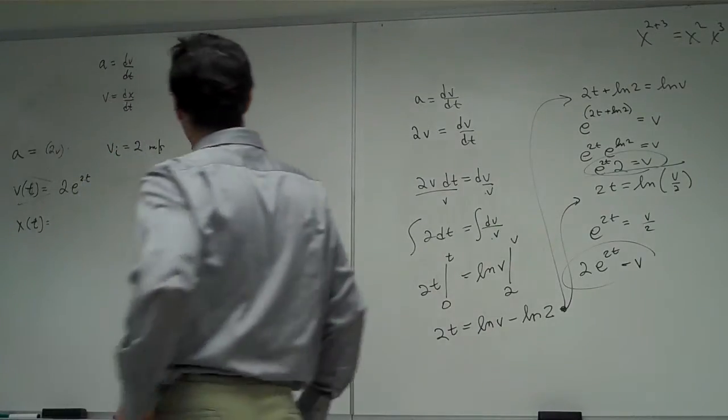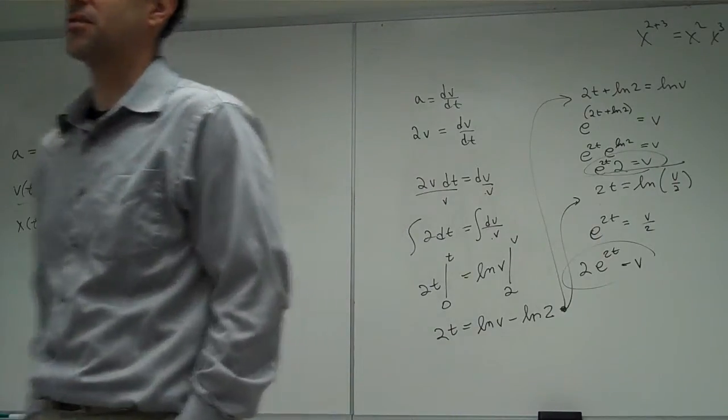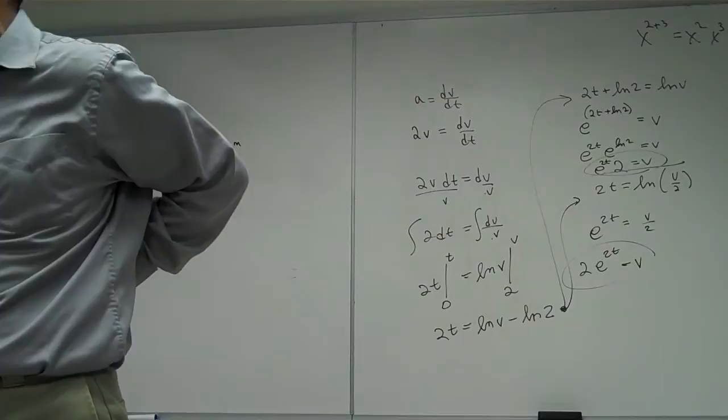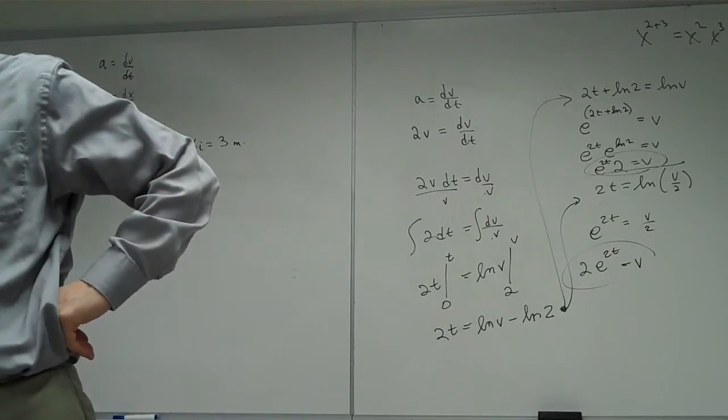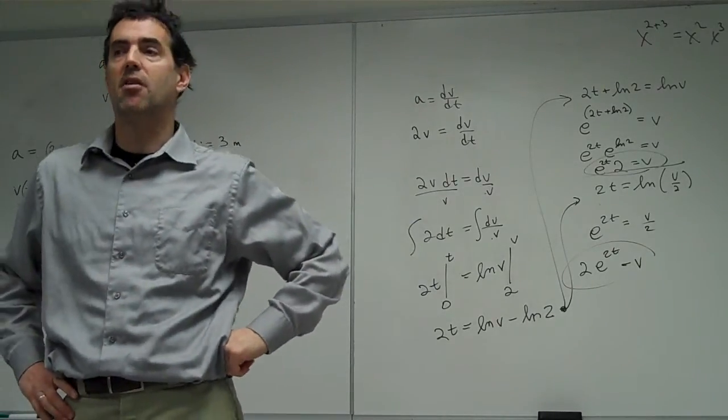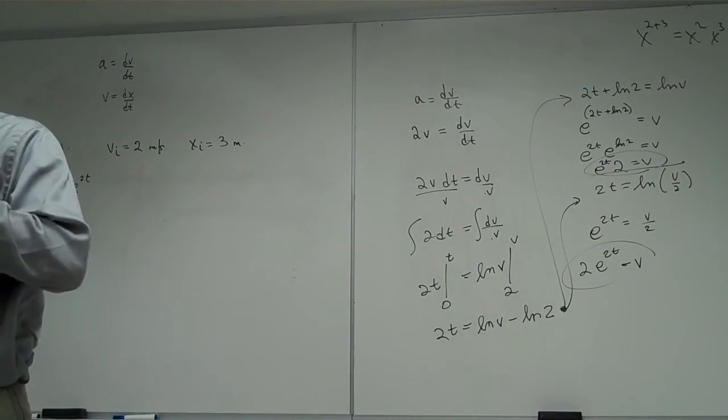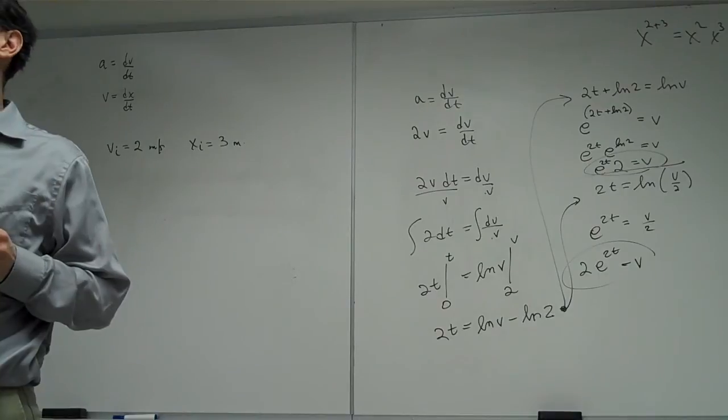So my velocity as a function of time is increasing very rapidly. Take a second and try to figure out my position as a function of time. While you're doing that, make sure one of the two of you is logged into the computer screen. Either you or the person next to you. If you're not logged in, go ahead and fire up your computer while you're working on this one.